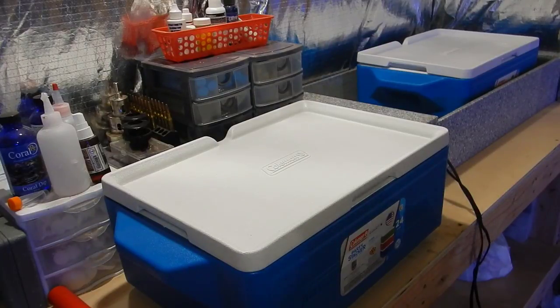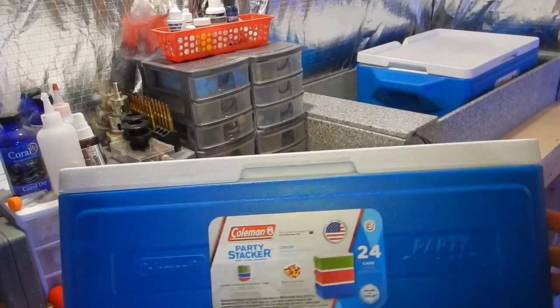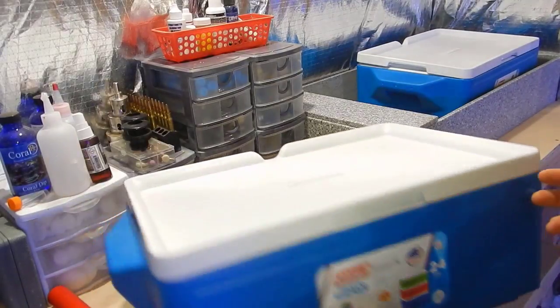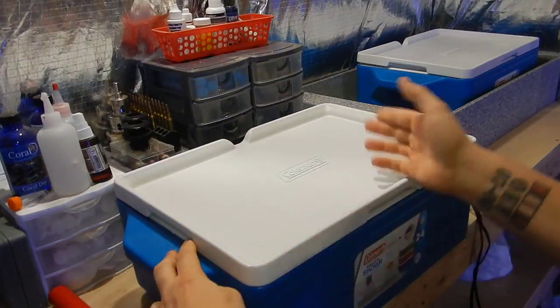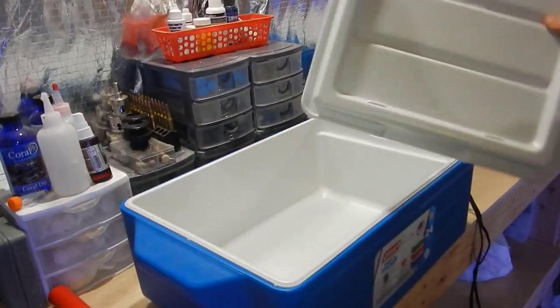These are Coleman 24-can coolers. I picked them up from eBay, they're about $25 a piece with free shipping, and they're stackable. I have the other one over there and I'm only going to use two for right now because I only plan on bringing three racks.